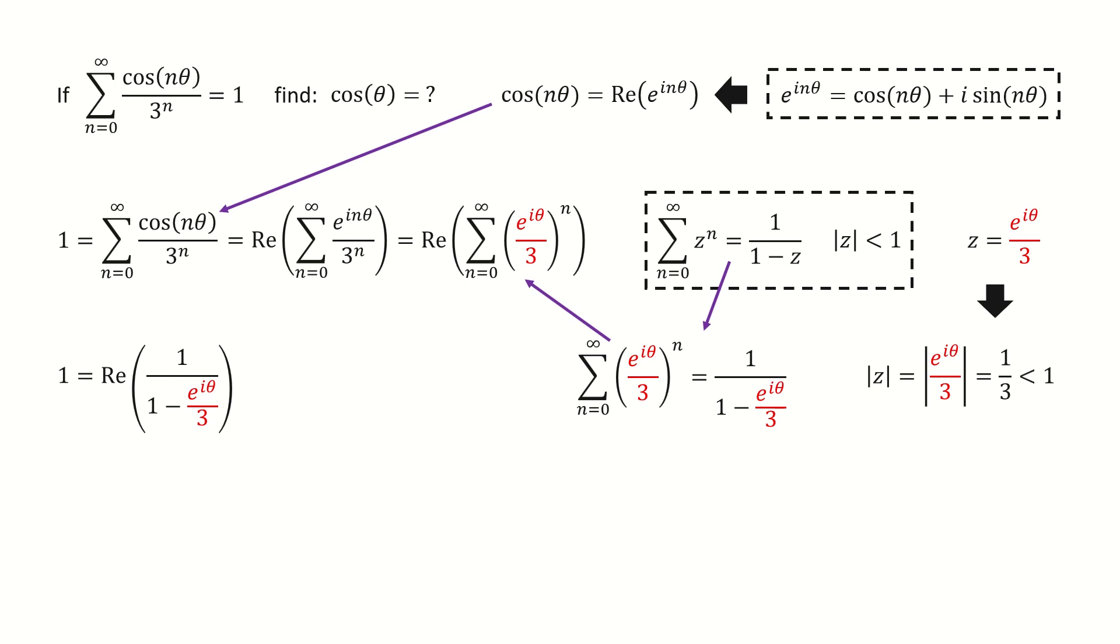Next, we need to do some algebra to find the real part for the right-hand side. So we multiply the conjugate term on both numerator and denominator. Then we expand them.